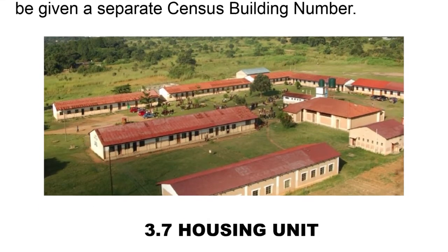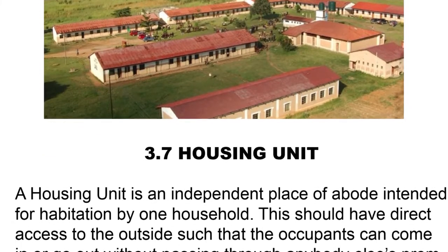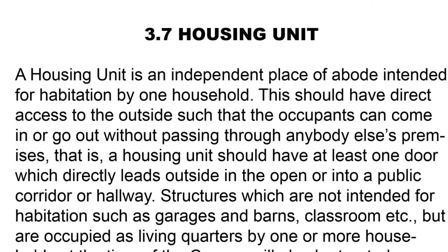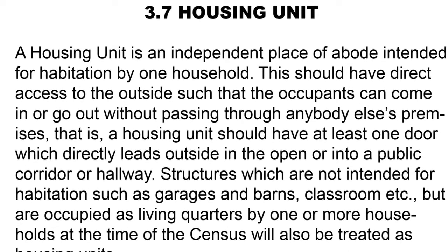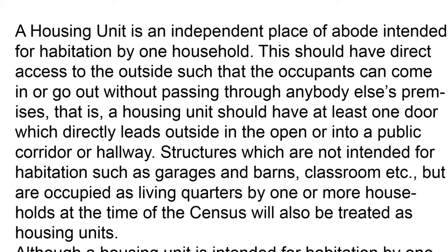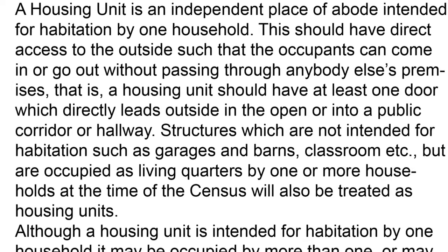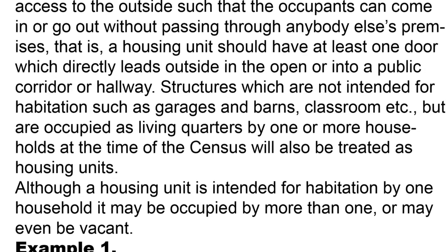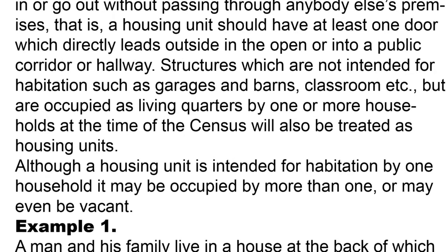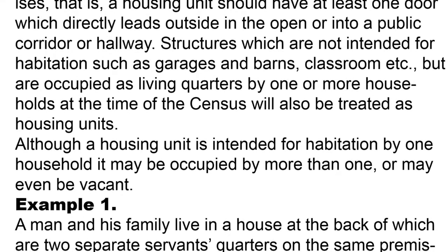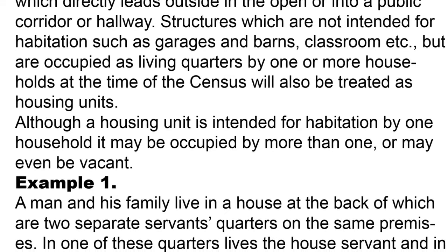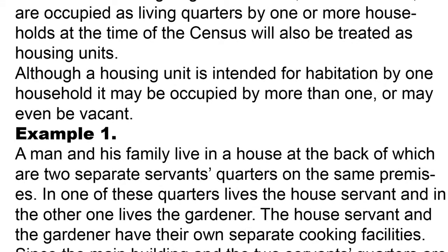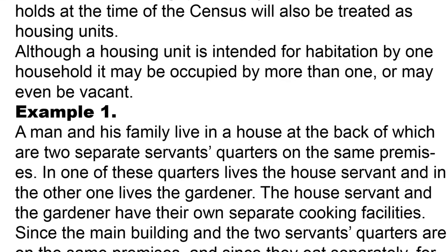A housing unit is an independent place of abode intended for habitation by one household. It should have direct access to the outside such that occupants can come in or go out without passing through anybody else's premises — that is, it should have at least one door which directly leads outside or into a public corridor or hallway. Structures not intended for habitation, such as garages, barns, classrooms, etc., but occupied as living quarters by one or more households at the time of the census will also be treated as housing units. Although a housing unit is intended for habitation by one household, it may be occupied by more than one household or may even be vacant.